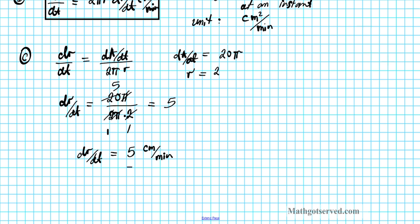What's the meaning of this result in the context of this problem? So we have to understand what's going on. What this means is the radius is increasing because we have a positive rate, increasing at 5 centimeters per minute when the radius is 2 centimeters.